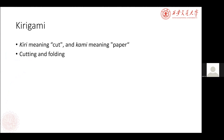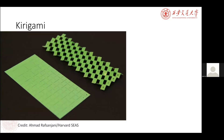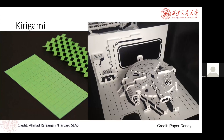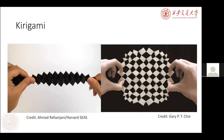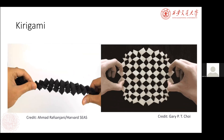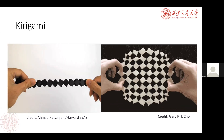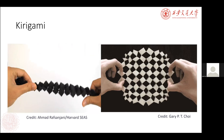Kirigami is another concept — still a Japanese word, meaning paper cutting. Compared with origami, the difference is that besides folding, cutting is also allowed in kirigami design, which means kirigami has more design freedom for geometric modeling. The idea of kirigami has been widely applied in material science and also in art design. On the right is a pop-up structure. After cutting a flat sheet of material, one structure shows new material properties and rich curvature variation, and the other shows an aesthetic structure expanded from a square to a circle.